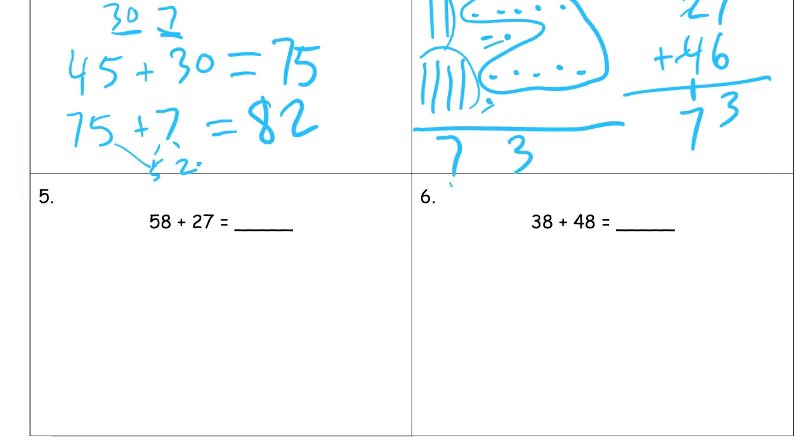58 plus 27. All right, so let's take the 27 and make it a 20 and a 7. And I can start with 58 plus 20. I'm adding just two more tens, which makes it 78. And then 78 plus the seven. Think of the seven as a two and a five, and then this two will get you to 80, and then five more, 85.